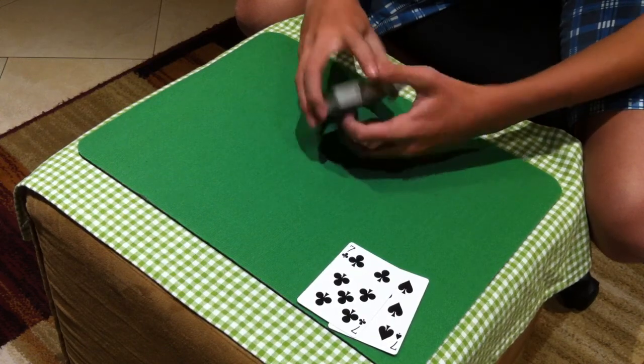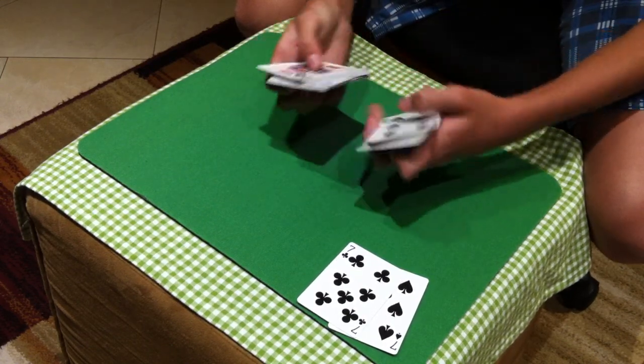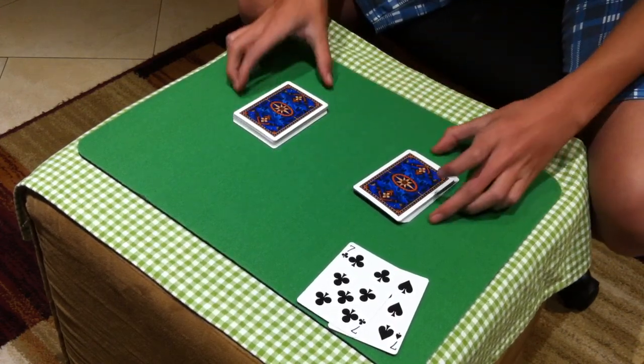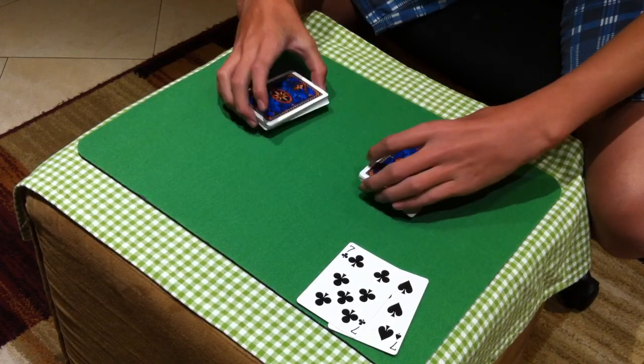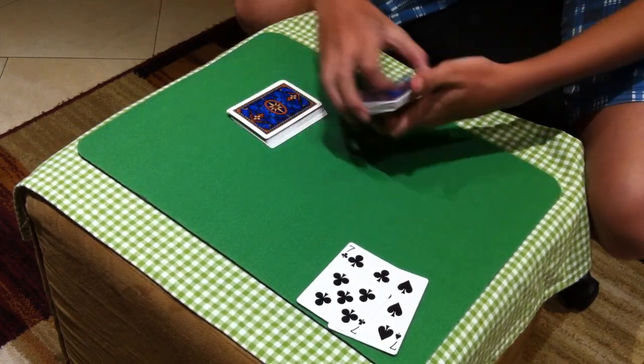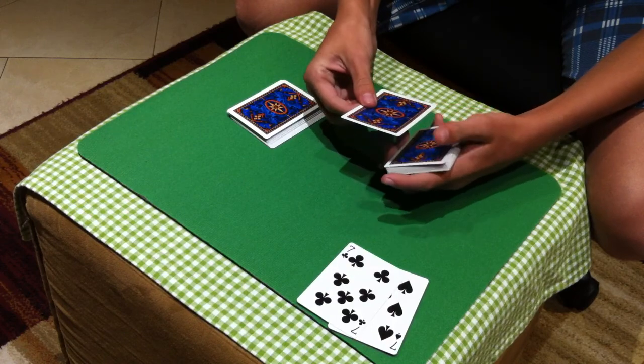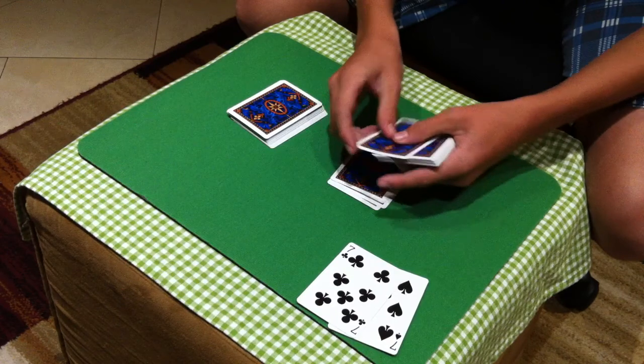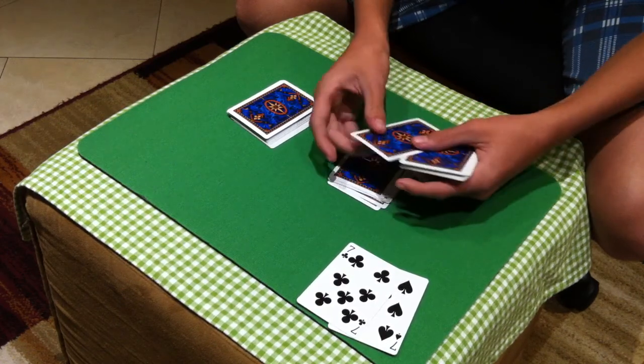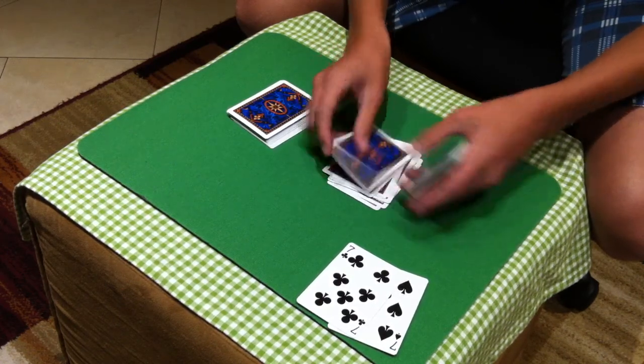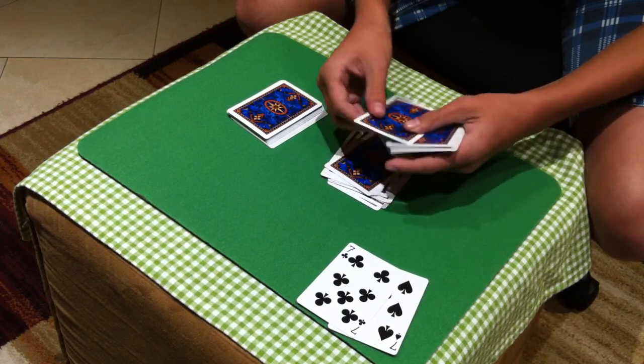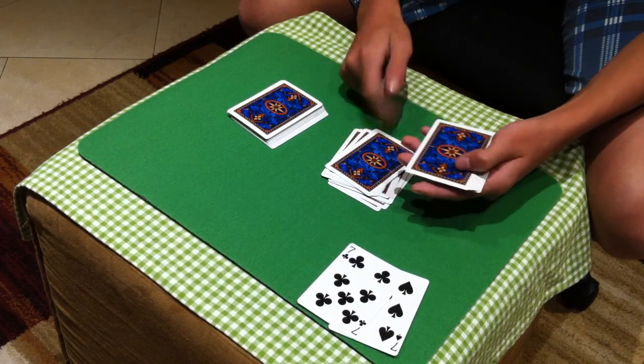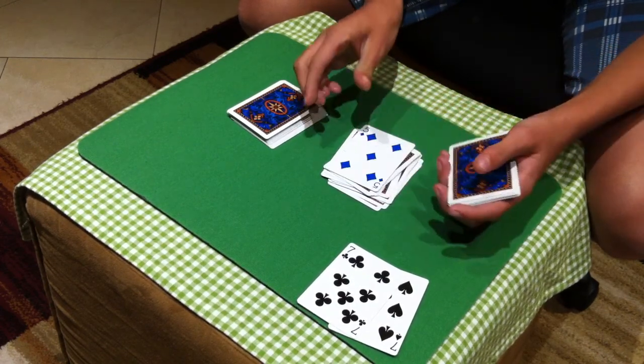What I can also do is, I can just cut the deck about there. And you can choose any packet. So let's say they choose this packet. You can say stop. And you can go on if you want to. And let's say they say stop here. So which card? This one or this one? Let's say this one. Five of Diamonds. Just going to place it on top.